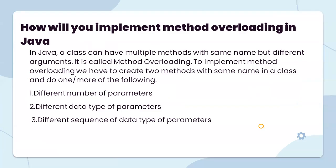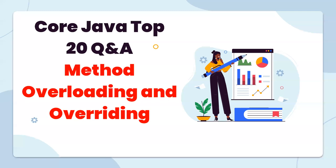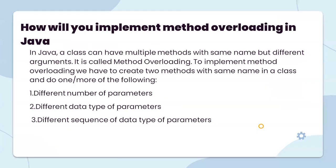The first question is related to today's topic: overriding and overloading. So how will you implement method overloading in Java? In Java, a class can have multiple methods with the same name but different arguments — that is called method overloading. To implement method overloading, we have to create two methods with the same name in a class.